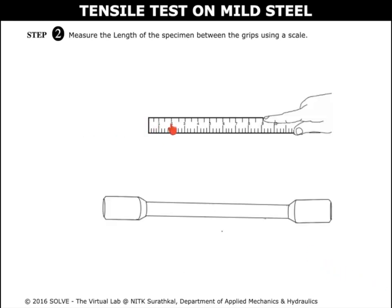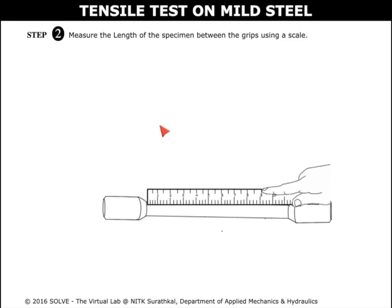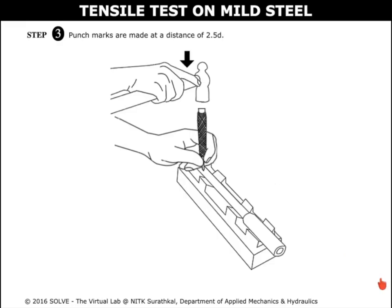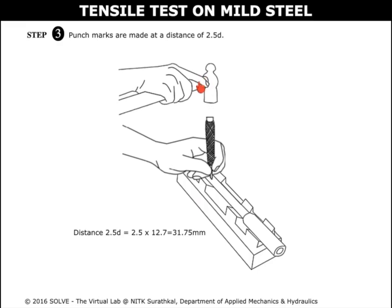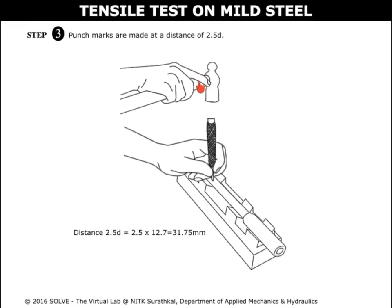Click on the scale to measure the length of the specimen between the grips. Click on the hammer to make the punch marks at a distance of 2.5D. So the total distance is 31.75.